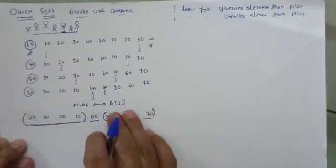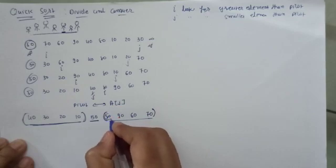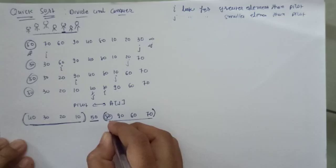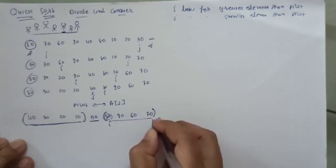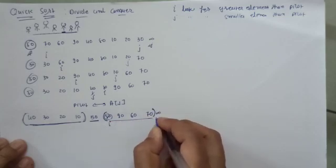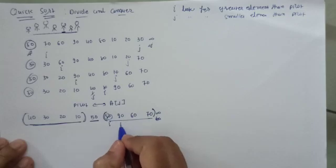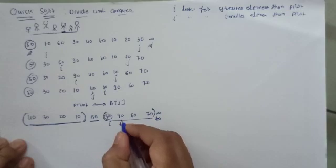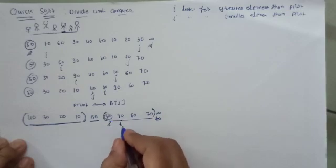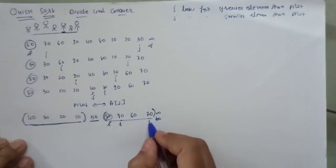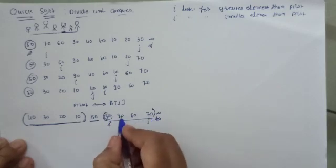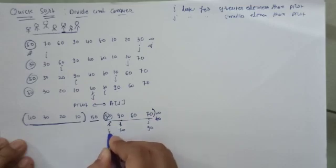Now assume 80 is the pivot point for the right sub-array. i starts at the beginning and j at the end. We increment i — i looks for a greater element than 80. 90 is greater, so i stops here. j looks for a smaller element than 80, and j stops at 70. Now 70 and 90 are exchanged; the pivot 80 remains in place, and 60 is to its left.